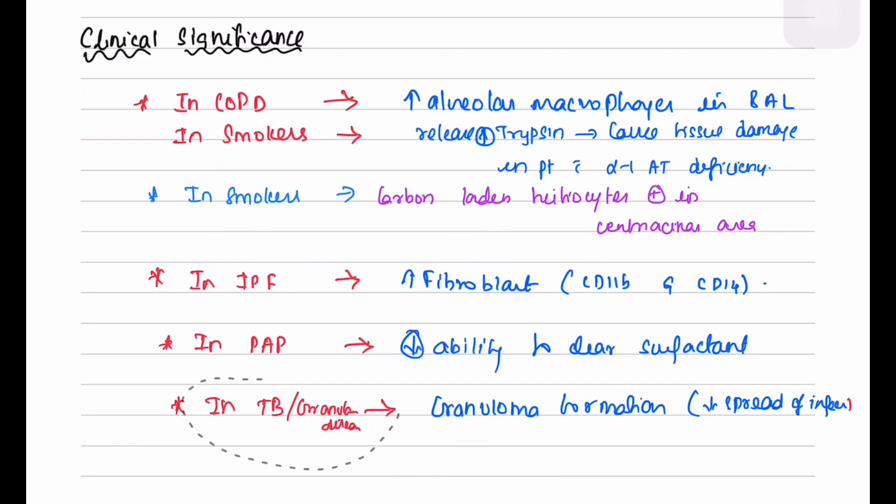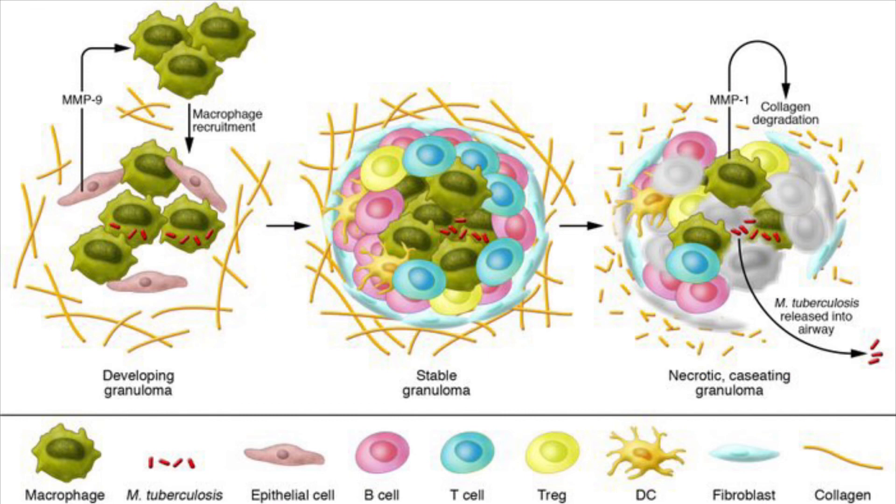Certain bacteria such as Mycobacterium tuberculosis can resist phagocytosis. In such cases, the alveolar macrophages contain the infection from spreading to the other organs by forming granulomas.